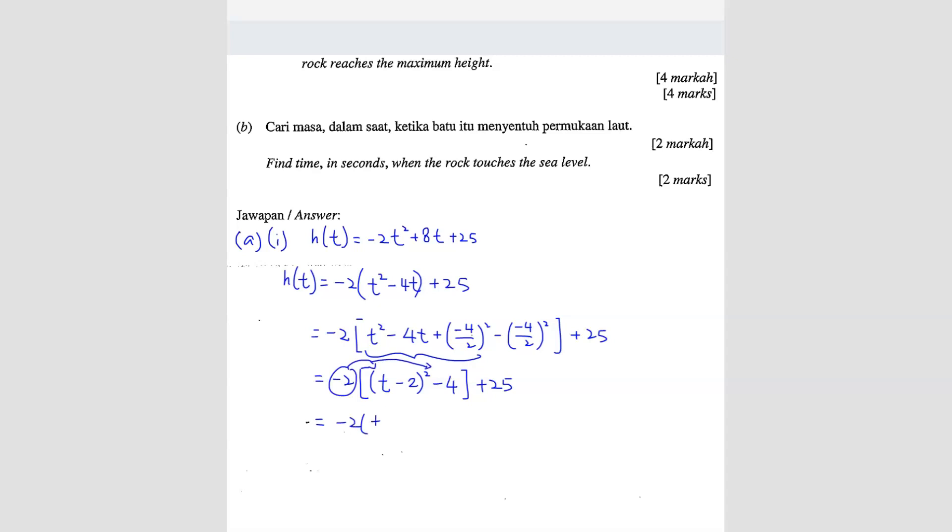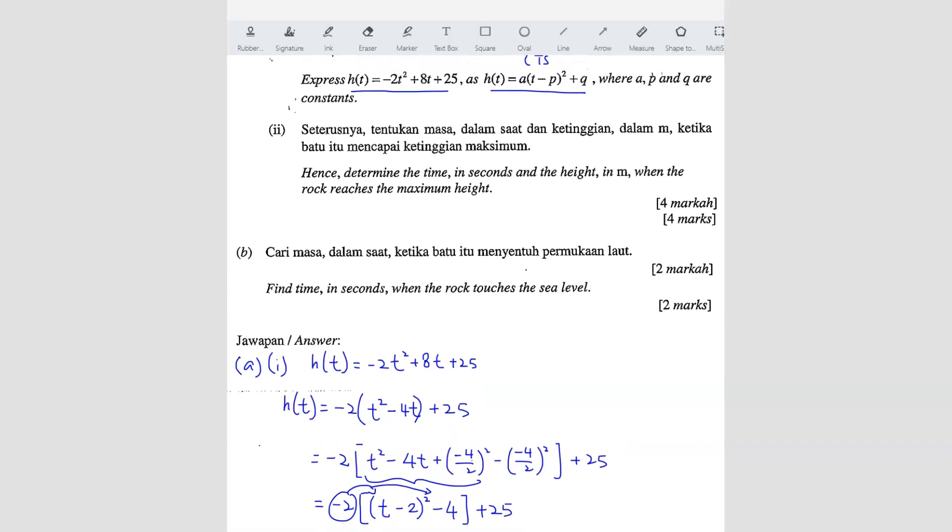So now I can expand this, expand inside. So I get negative 2t minus 2 square plus 8 plus 25. So answer is negative 2t minus 2 square plus 33. So this is your answer. I mean the format they want. That's how they wanted it.